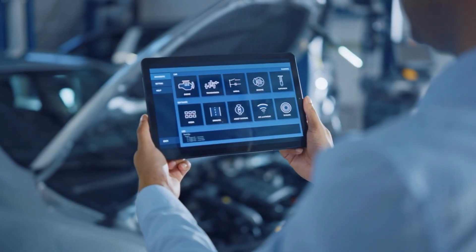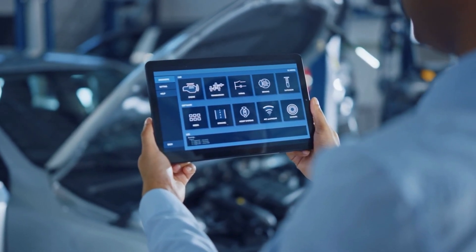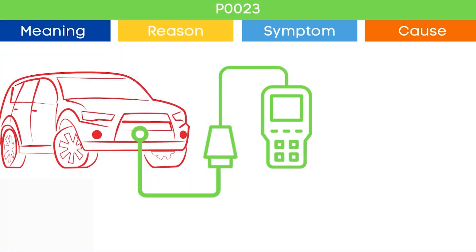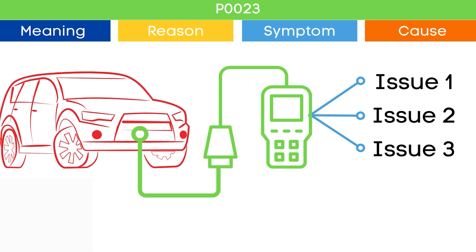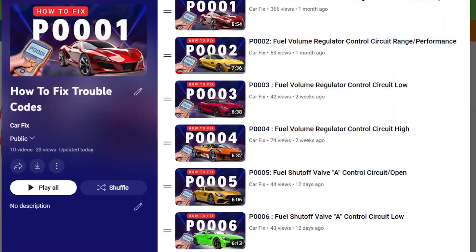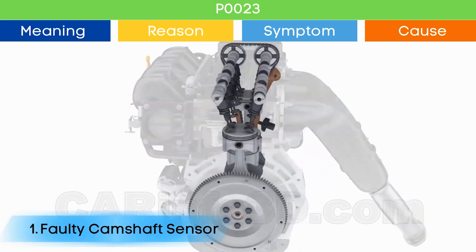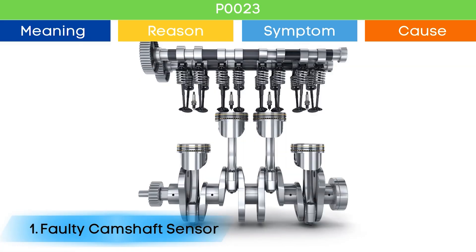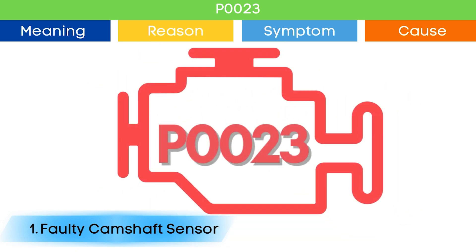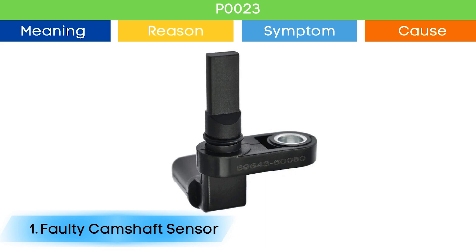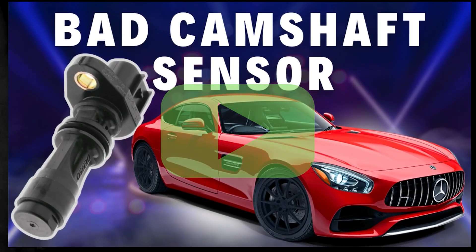The P1023 code may be triggered due to several causes. To ensure the root cause, check other activated OBD-2 codes, as they may indicate malfunctions in other engine management system components. Cause number one: bad camshaft position sensor. A malfunctioning camshaft position sensor may cause the ECU to detect an engine timing error, triggering P1023 along with other OBD-2 codes and symptoms related to a bad camshaft position sensor. Check our detailed video for more information — link in the corner.